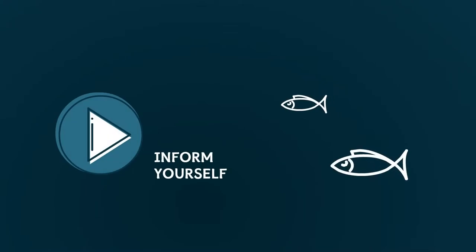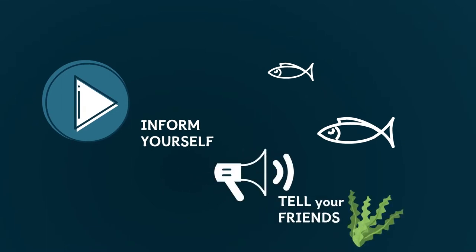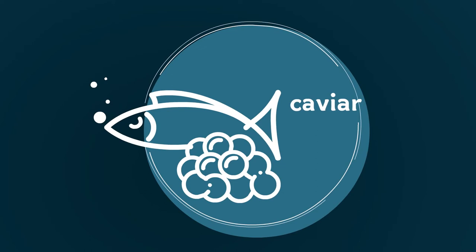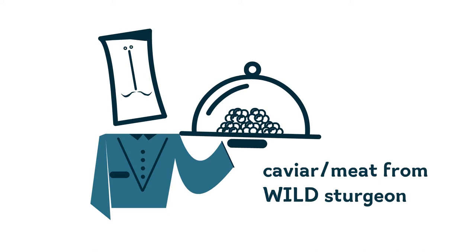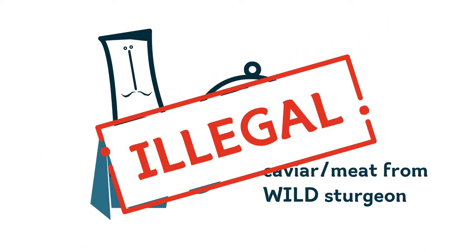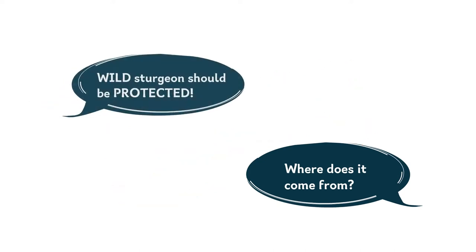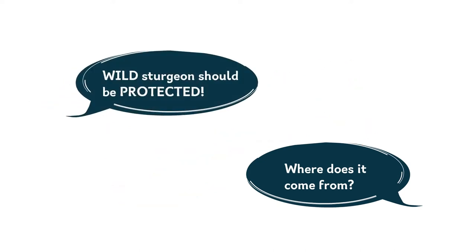So, here comes the important question. How can you and I help them? You've already taken the first step. You know there is a problem and you have the basic information. So, go ahead. Tell your friends about sturgeon. Tell them how ancient and how fascinating they are, how they travel thousands of kilometers simply to spawn. And now that I mentioned spawning, let's go back to the beginning when we talked about caviar. You should never eat caviar or meat from wild sturgeon because they're illegal. Always ask where it comes from and tell others that wild sturgeon should be protected.